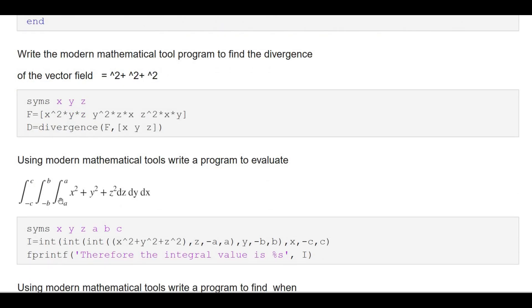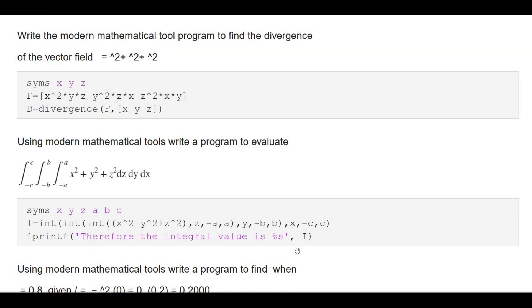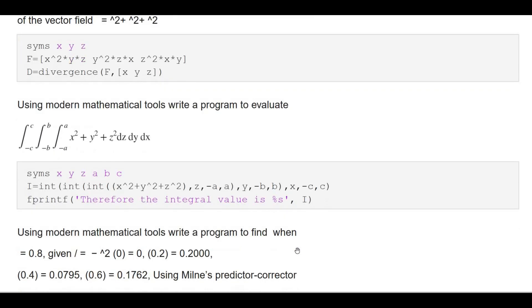For triple integration, use int three times: integrate with respect to z with limit −a to a, then integrate with respect to y with limit −b to b, then integrate with respect to x with limit −c to c. That is the code for triple integration.